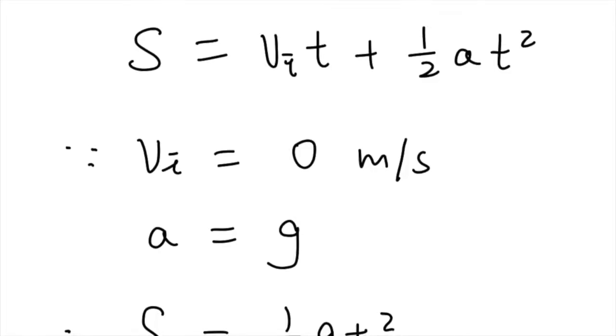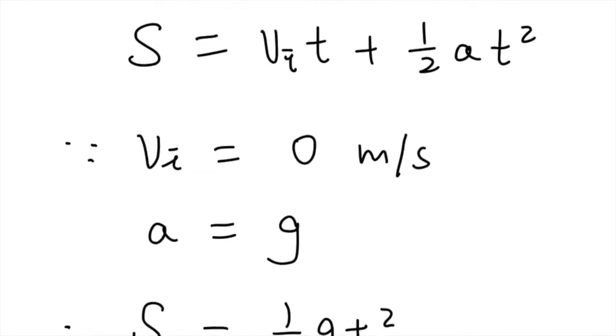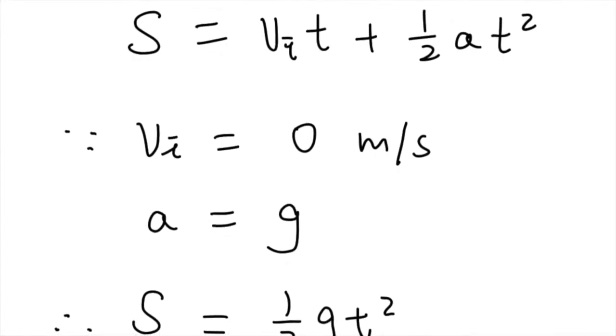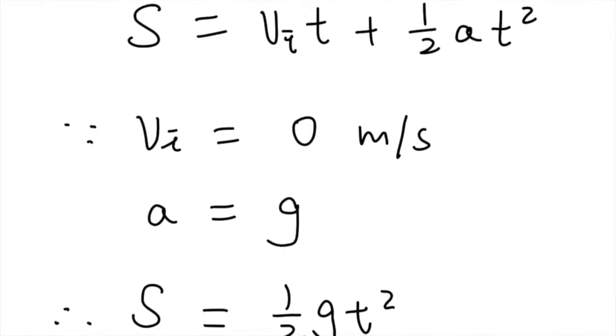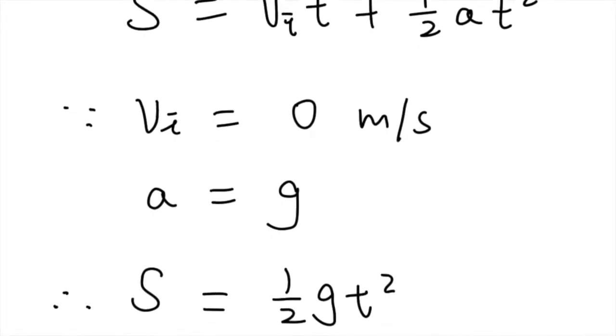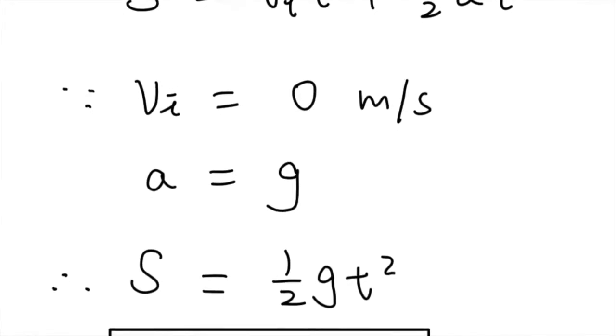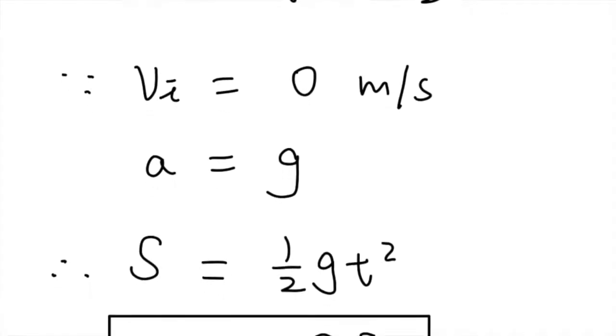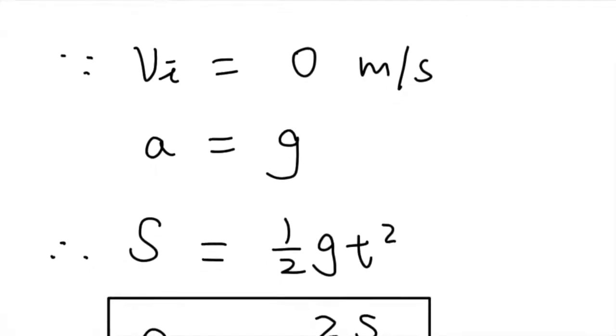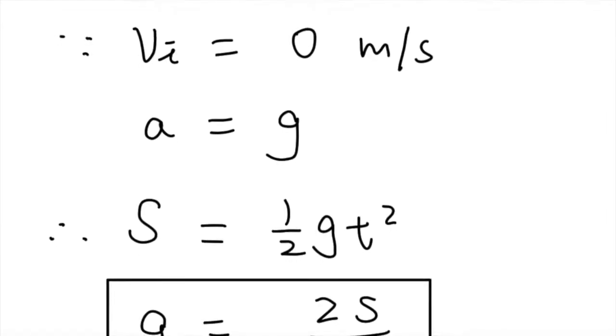This method uses free fall to figure out the gravitational acceleration. The equation we use is one of the motion equations, S equals vi t plus 1 over 2 times acceleration times t squared. The object is still, which means the initial velocity would be zero. And the final equation we have here is S equals 1 over 2 times acceleration times t squared.